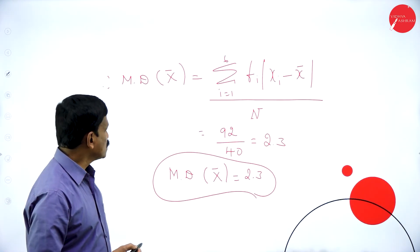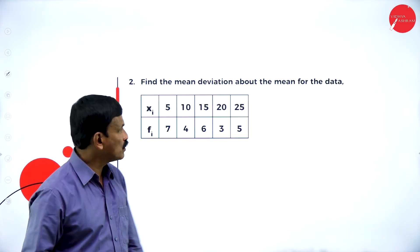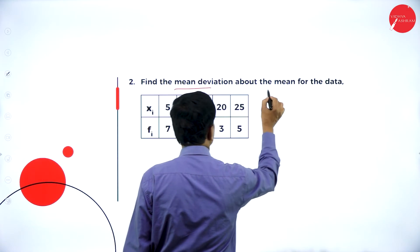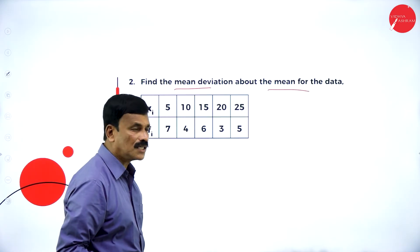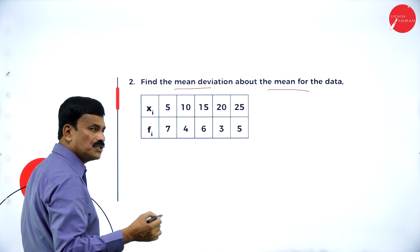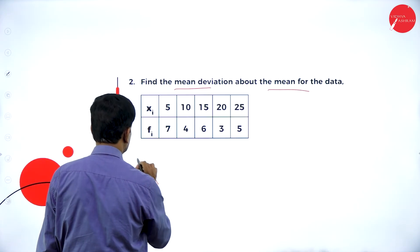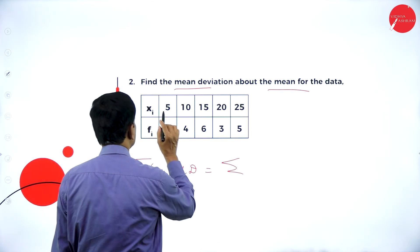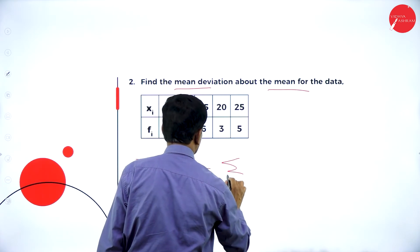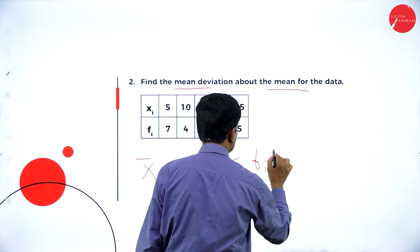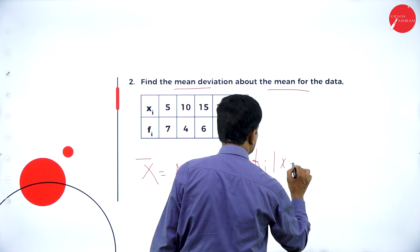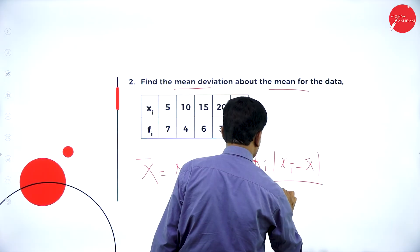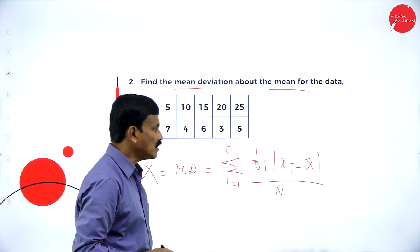Now let us move on to a similar type of problem. Find the mean deviation about the mean for the following data. The formula is: MD(x-bar) equals sigma, i from 1 to 5, fi * |xi minus x-bar| divided by n, where n is sigma fi. First find x-bar, then arrange the given values in a table with columns xi, fi, fi*xi, |xi minus x-bar|, and fi*|xi minus x-bar|.